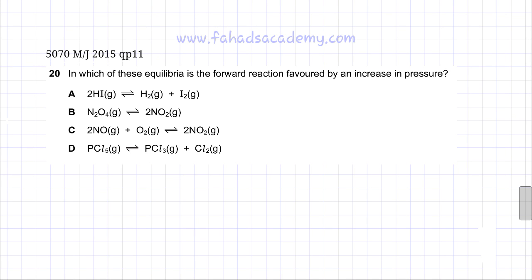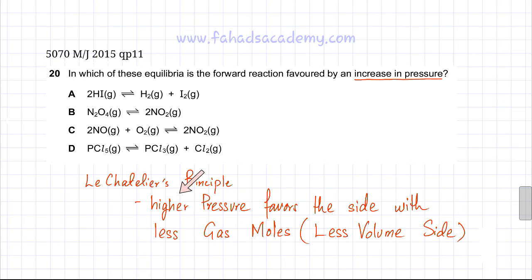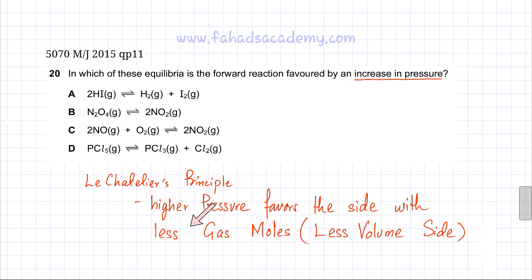The following question is about reversible reactions. The question states: in which of these equilibria is the forward reaction favored by an increase in pressure? This refers to Le Chatelier's principle, which states that higher pressure favors the side with less gas moles or less volume. If you increase pressure, you are basically compressing the substance, so the side which occupies lesser volume is favored, determined by which side has fewer gas moles.